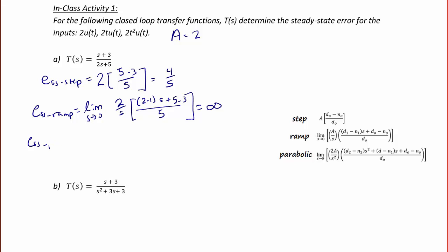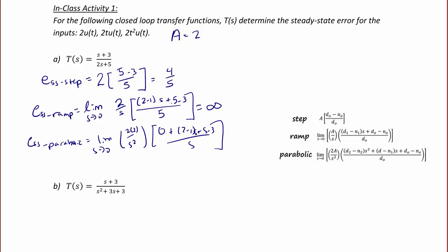For a parabolic input, for similar reasons, when we take the limit as s approaches 0 of 2·(2/s²) times (d2 - n2)·s², we still have (2 - 1)·s + (5 - 3) over 5, so the 2/s² goes to infinity. It tracks at 4/5 for a step input, but it doesn't track at all for a ramp or parabola.